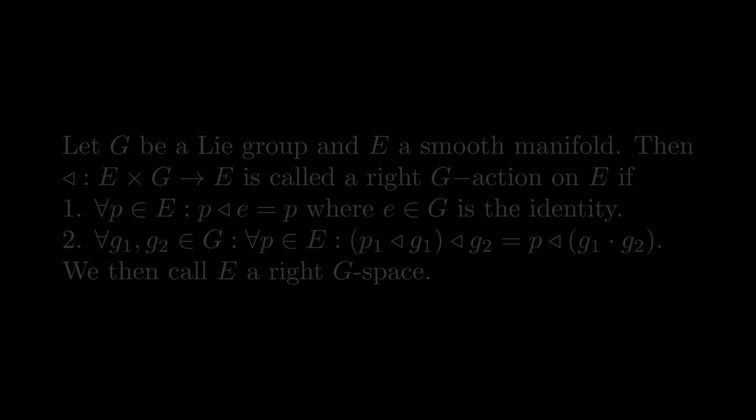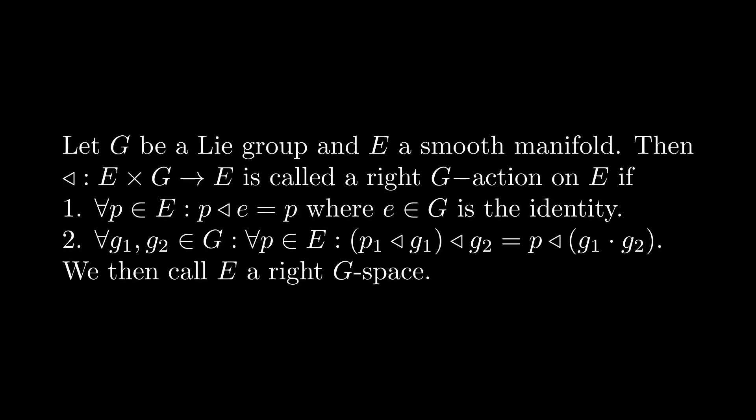We start with explaining right G-spaces. Its definition says: let G be a Lie group and E a smooth manifold. Then the map with the left triangle symbol is called a right G-action on E if it satisfies the following conditions. Once these conditions are satisfied, we call E a right G-space.